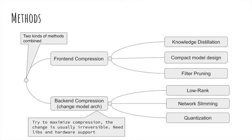Usually for front-end compression, it won't change the network architecture, and it includes knowledge distillation, compact model design, and filter pruning. The other type is back-end compression, and it usually will change the network significantly, and those changes are irreversible. It needs the hardware to support this compression method — for example, if you want to use it on a single chip microcomputer, you need to check whether it supports the back-end compression method. Back-end compression methods include low rank, network slimming, and quantization.